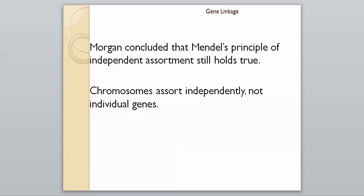Morgan concluded that Mendel's principle of independent assortment still holds true, because it is the chromosomes that assort independently, not the individual genes. Up to this point we said all genes were assorted independently, but we now know that's not true because of Morgan's work. He noticed many genes were inherited together similarly, because they were so close together. He could actually map out the distances between genes, and since they were so close, they did not split up during crossing over.